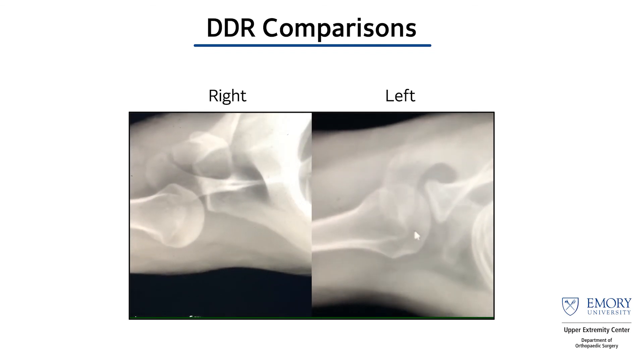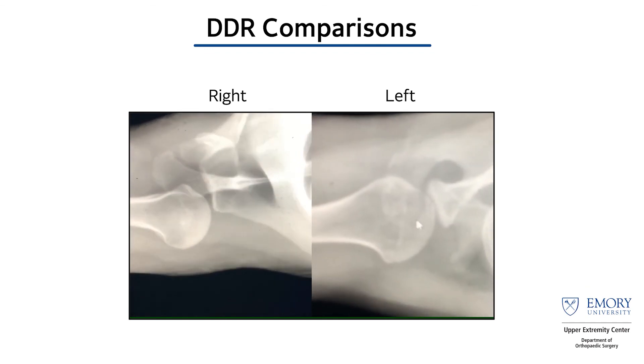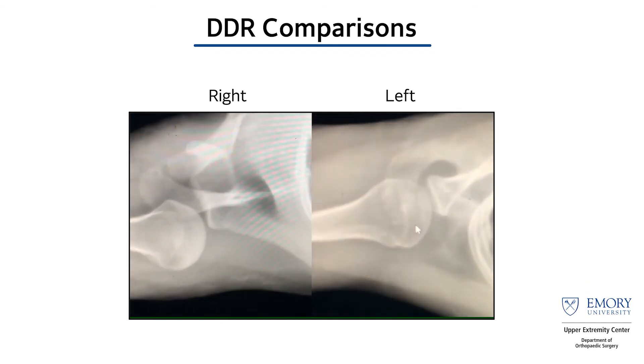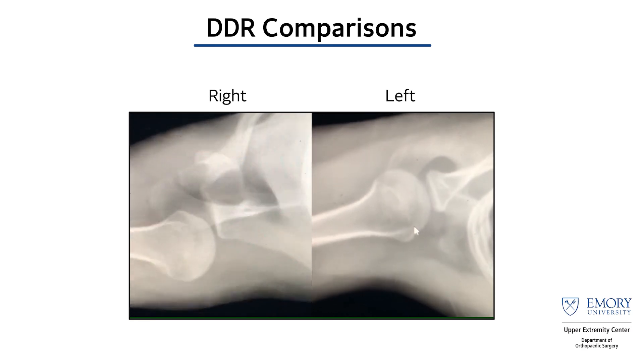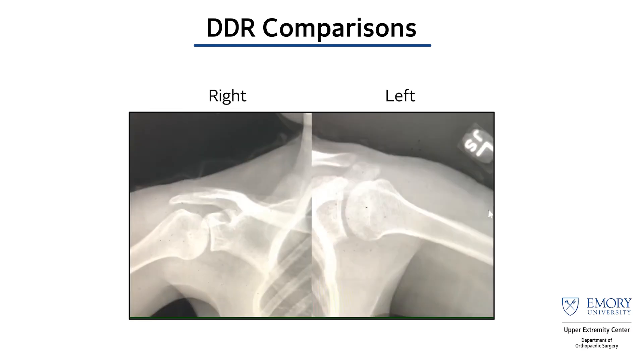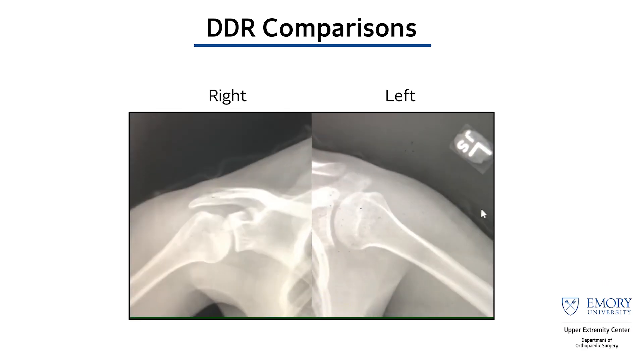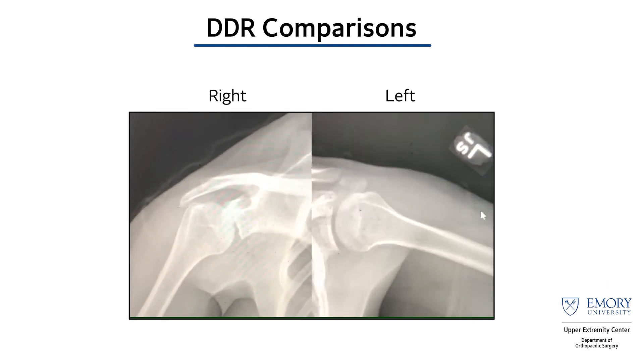On the right side, you can see how she is posteriorly de-centered and posteriorly subluxed — she's not able to move her shoulder because she's not actually seated in the glenohumeral joint.